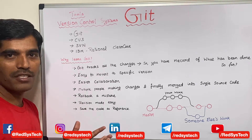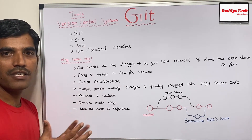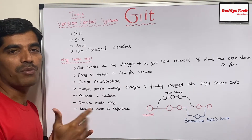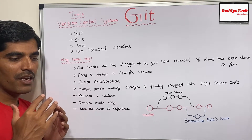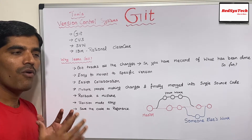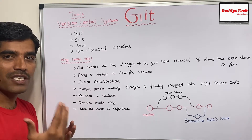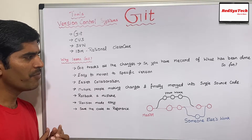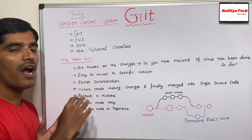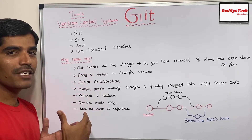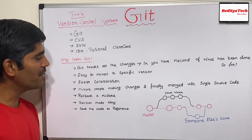Let's say you are adding a new feature to an application and every day you are modifying around 10 files. You are working for almost six months. By the end of six months, you will know exactly what changes you made, on what date, and what those changes were for. These kinds of tracking records you will get if you use Git, and in order to use Git you have to learn how it works.